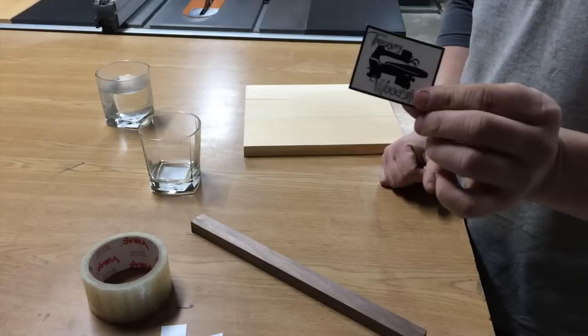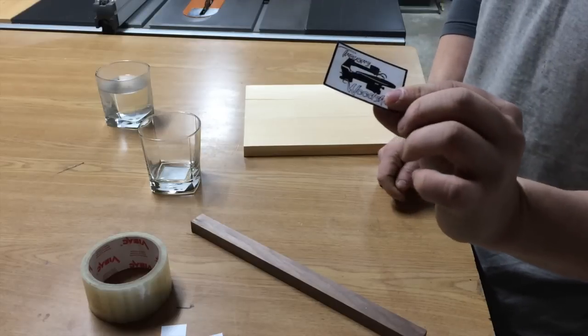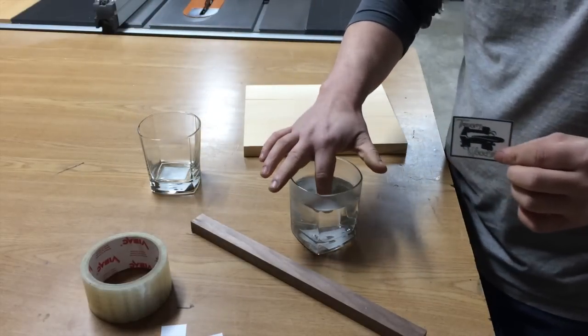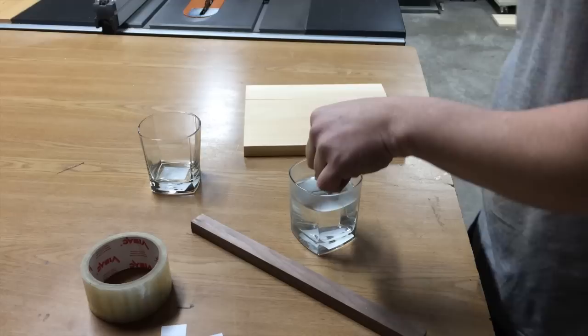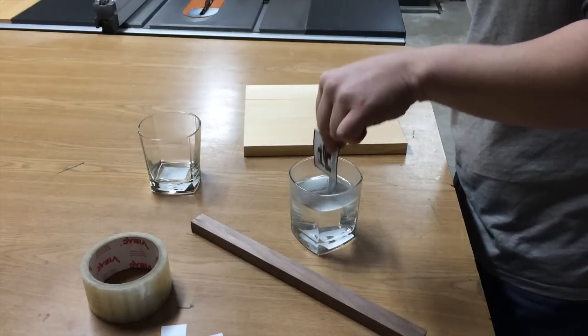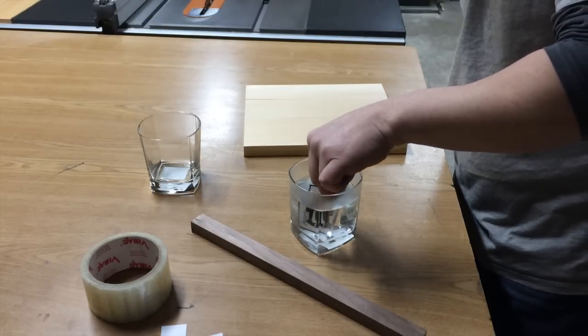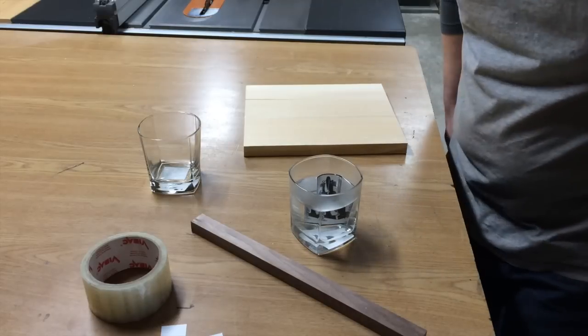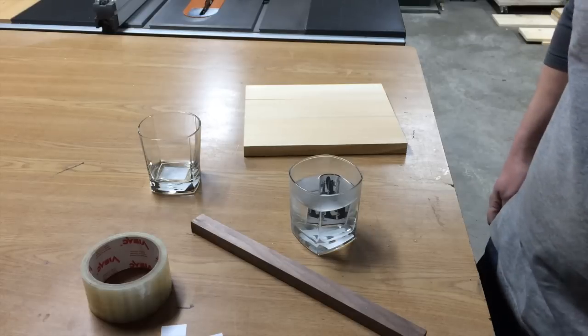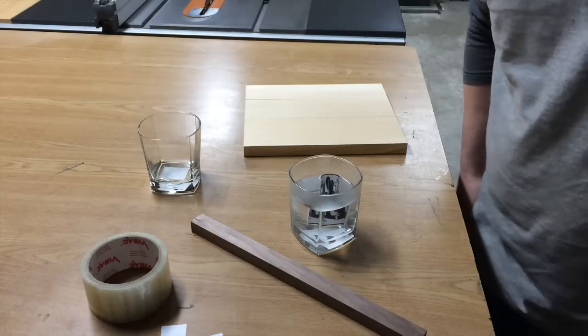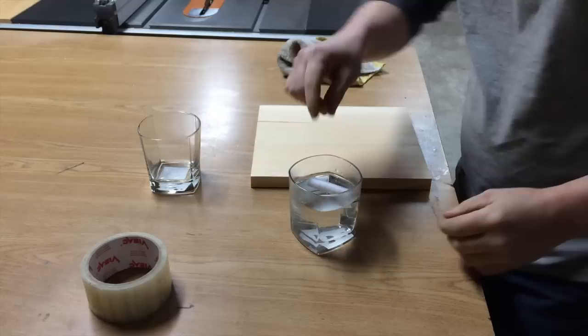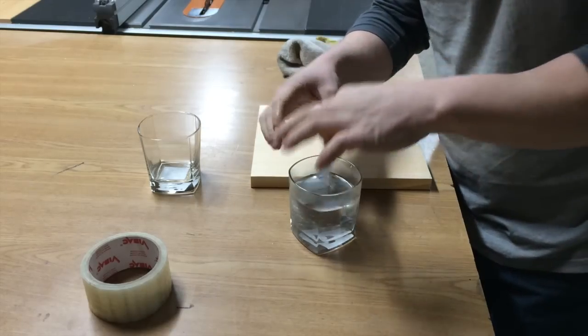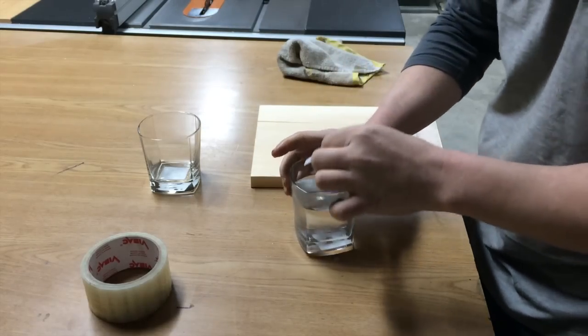So now we've got our piece cut out, we have our tape on there. Next step is warm water. Just going to dunk it in there and we're going to let that sit for, I don't know, five or six minutes and we'll come back.